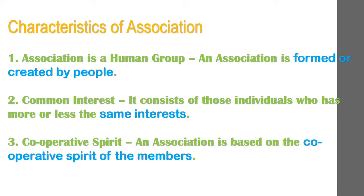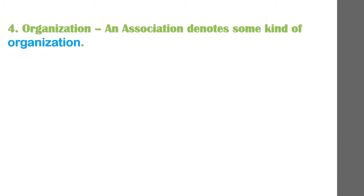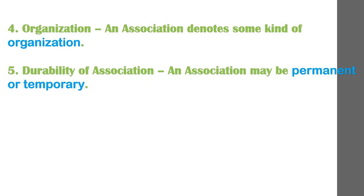Number three: cooperative spirit. An association is based on the cooperative spirit of its members. People work together to achieve some definite purposes. For example, a political party has to work together as a united group on the basis of cooperation in order to fulfill its objective of coming to power. Number four: organization. An association denotes some kind of organization — it is essentially an organized group. Organization gives stability and proper shape to an association, and refers to the way in which statuses and roles are distributed among the members.